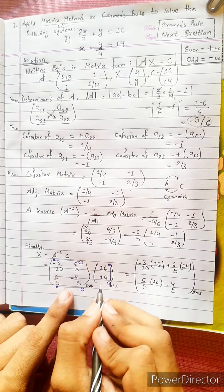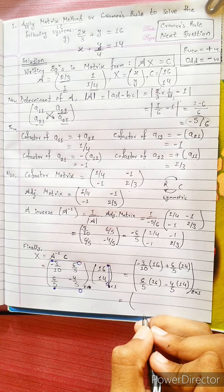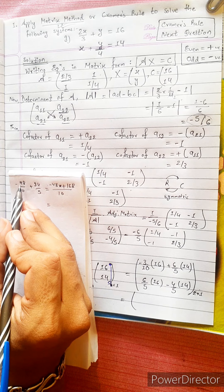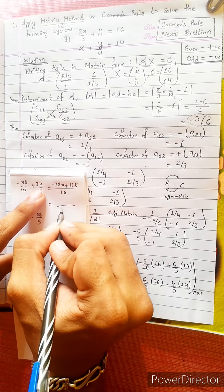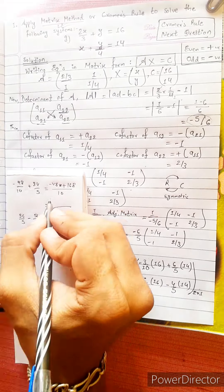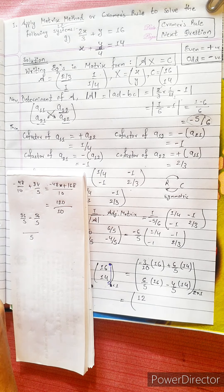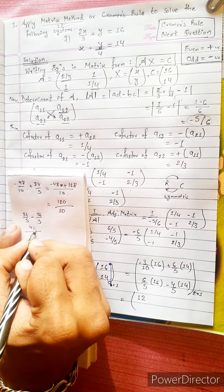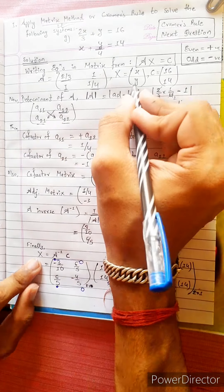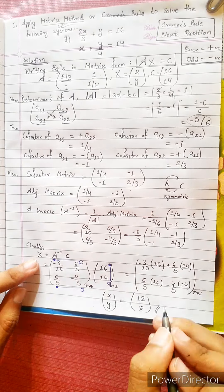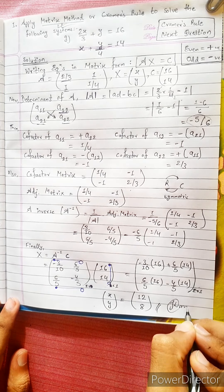Computing the multiplication: for x, we get (minus 3/10)(16) plus (6/5)(14). That is minus 48/10 plus 84/5, which simplifies to minus 48/10 plus 168/10, giving 120/10 equals 12. For y, we get (6/5)(16) plus (minus 4/5)(14), which gives 96/5 minus 56/5 equals 40/5 equals 8. So x equals 12 and y equals 8.